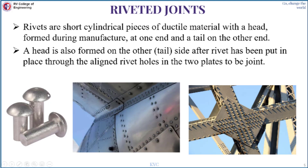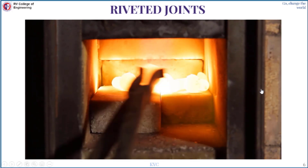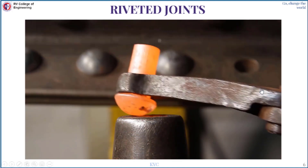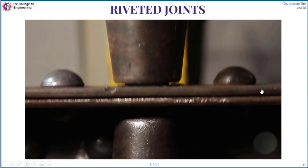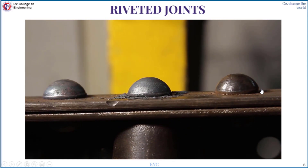A rivet has three portions: the head portion, the shank portion, and the tail portion. Riveting is done similar to a forging process where two sets of dies are used — one die at the bottom holds the rivet, and another die on top applies the force. The metal is heated and force is applied from the top. You can see the two metal plates joined with the help of the rivet as a permanent joint. To disassemble these components you need to break the rivet.